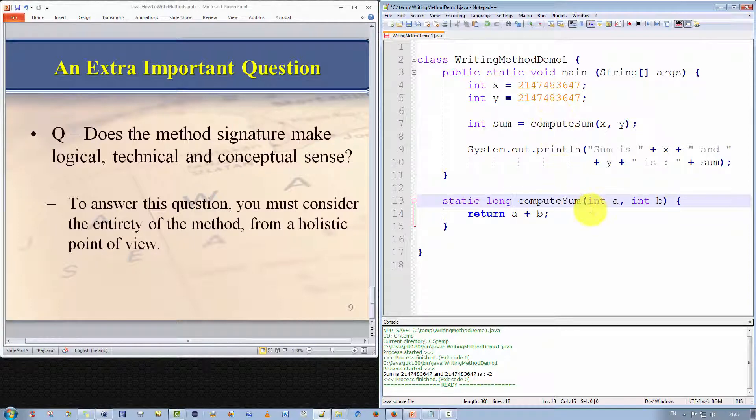But we must do a second thing. We must ensure that the result returned from compute sum is stored in a variable that is capable of storing the entire value. Compute sum now returns a long but sum is still defined as an int. So we must change the variable sum to be a long also. Okay, so there we go. Now that looks good. We compute, we read in two integers, we compute the sum of those integers, and we return them as a long. The local variable sum receives them as a long and then prints out the results. That should work, right. What do you think?